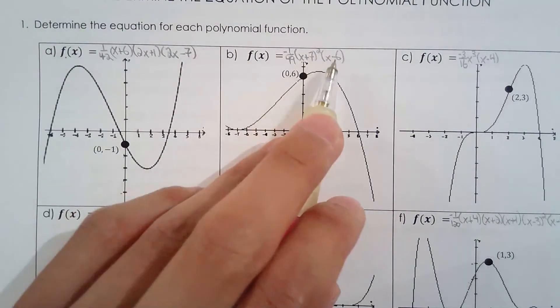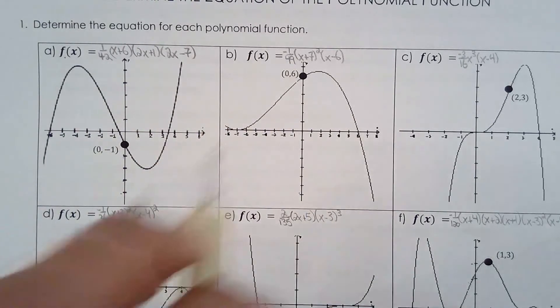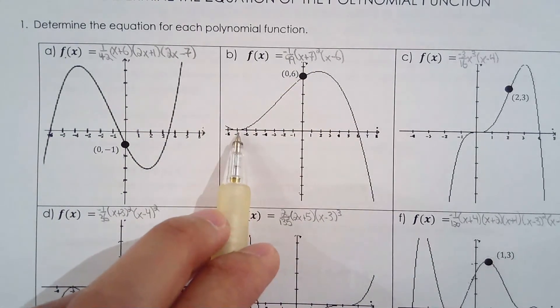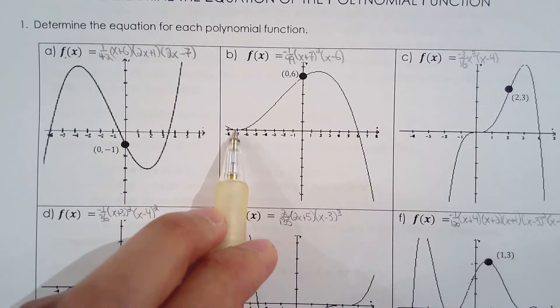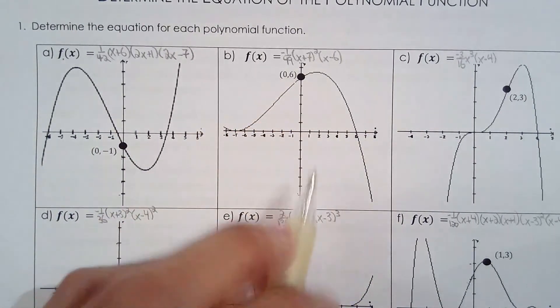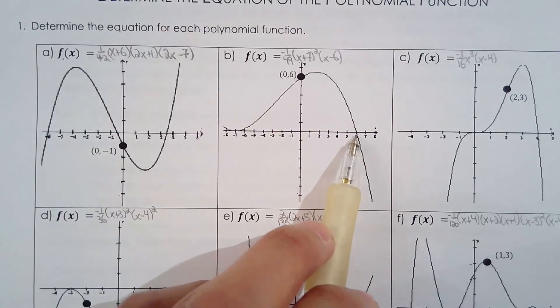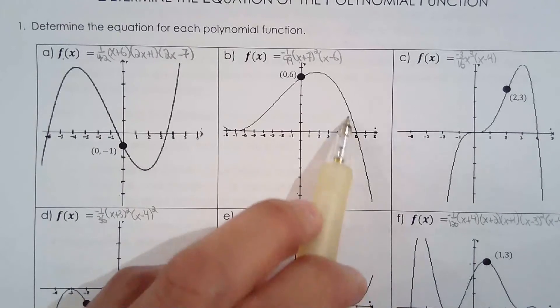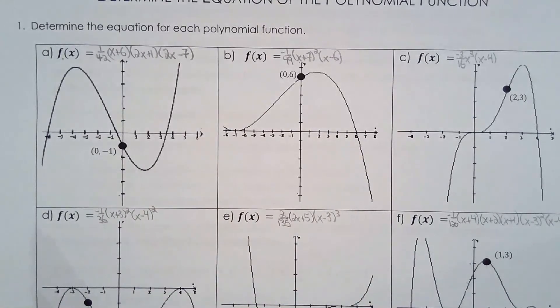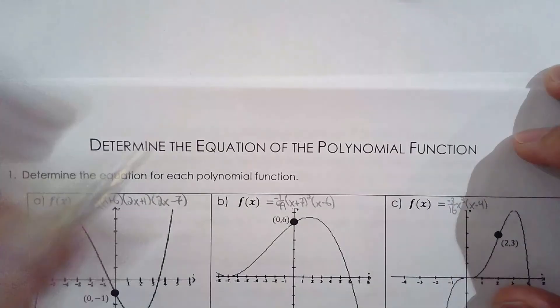We have here x plus 7, x minus 6. How do I get negative 1 over 49? So be careful, x plus 7 comes from the 0 negative 7, and as a bounce, so it's squared. And of course we're going with least possible degree to make our life easy. Here is x minus 6 to the power of 1, because it's crossing linearly. So I'll do the math, I'll do the math up here, there should be enough room.